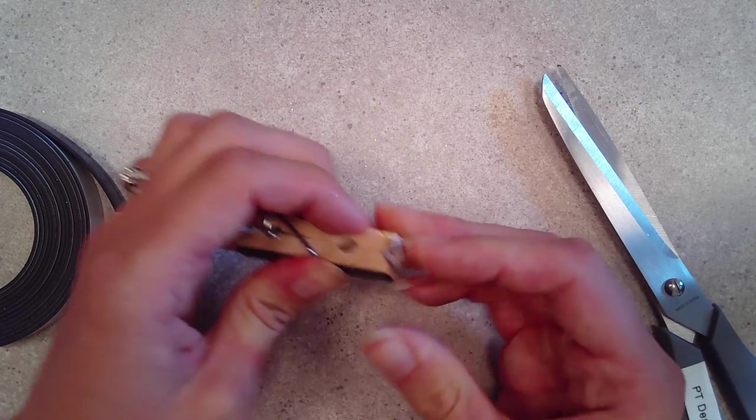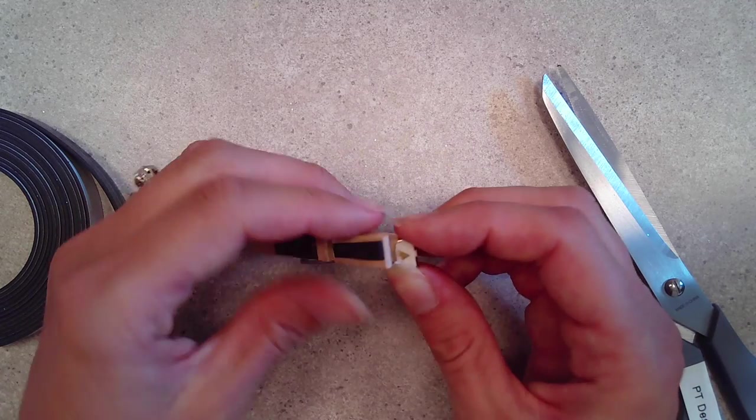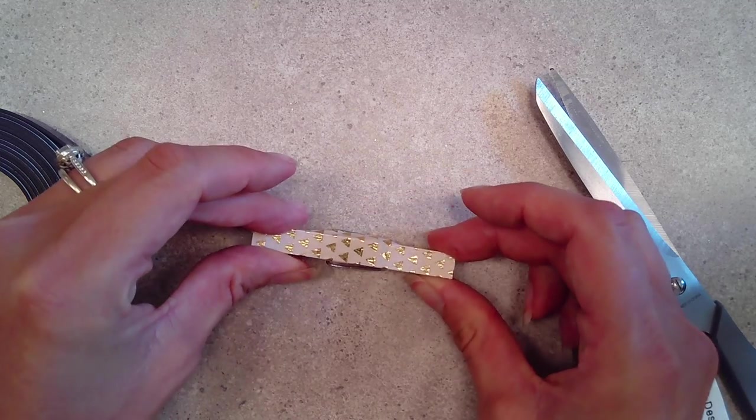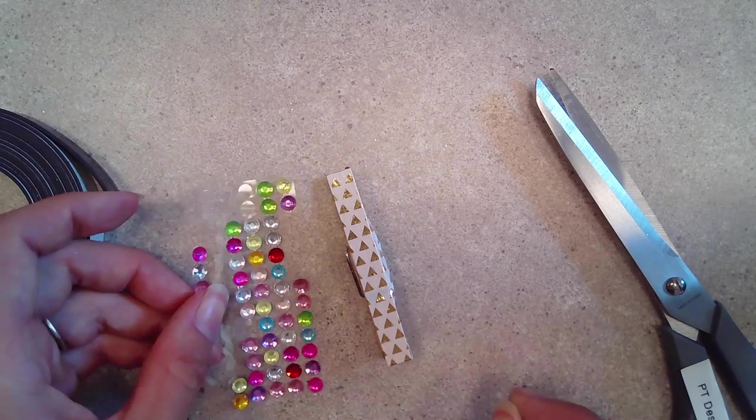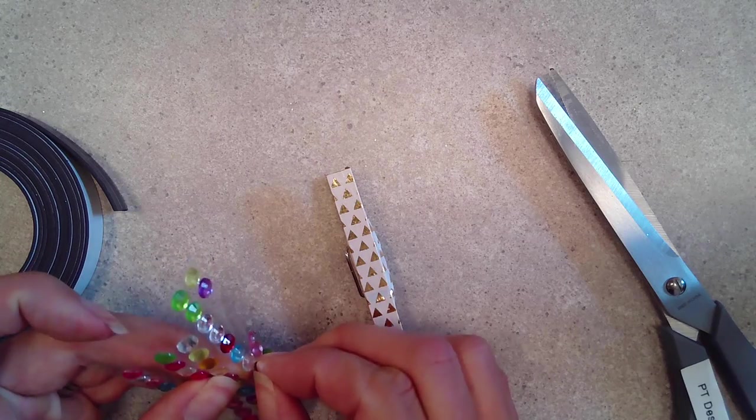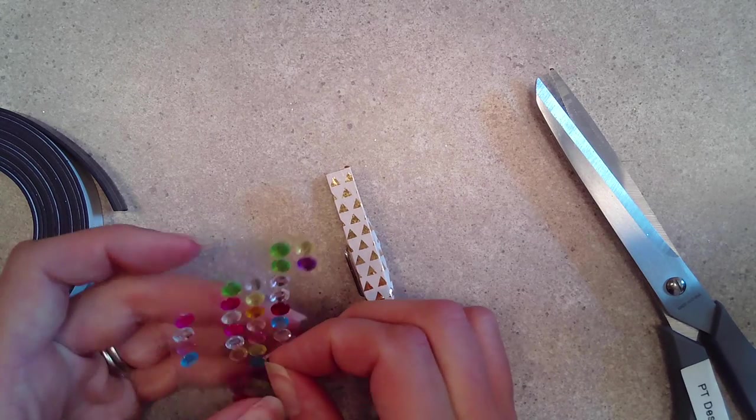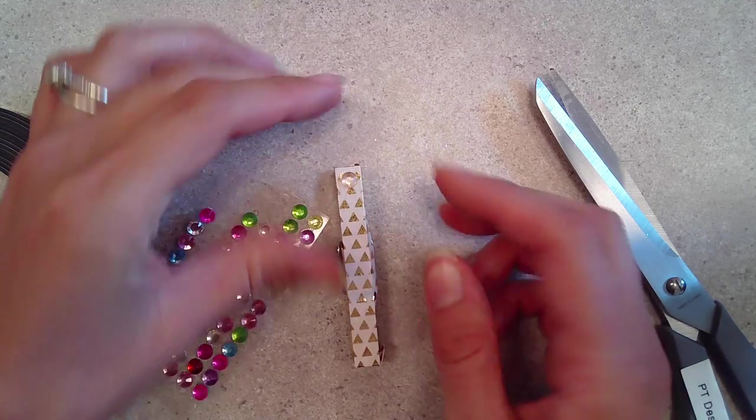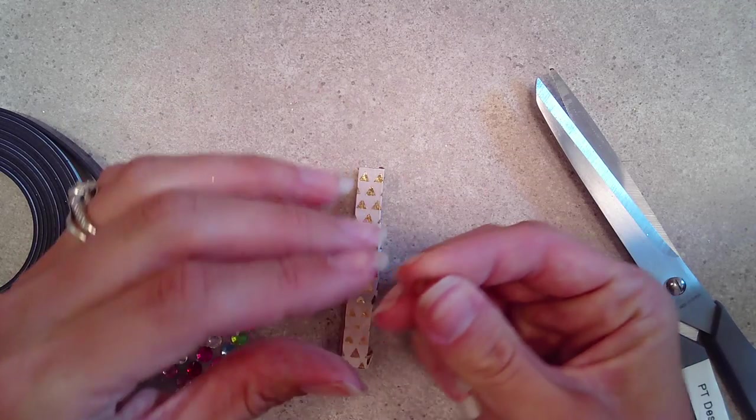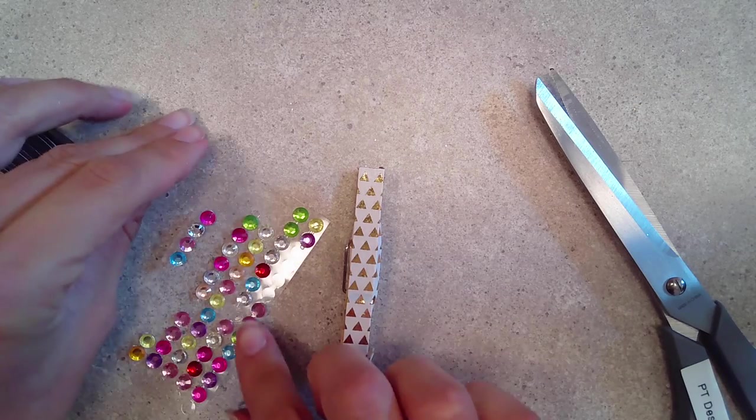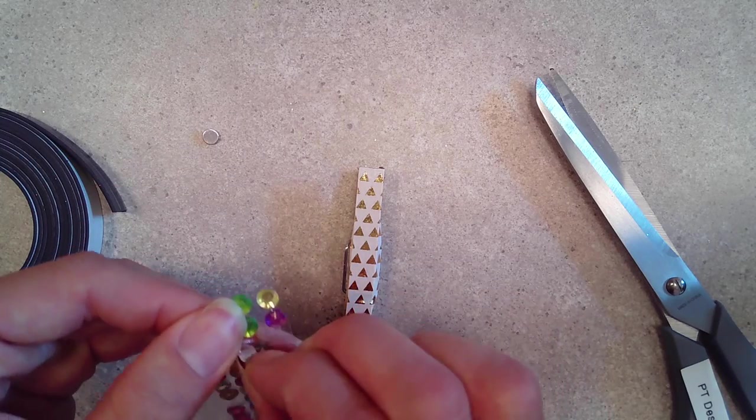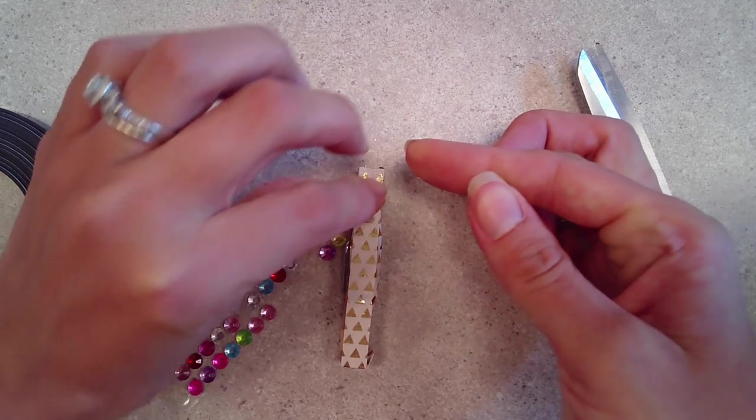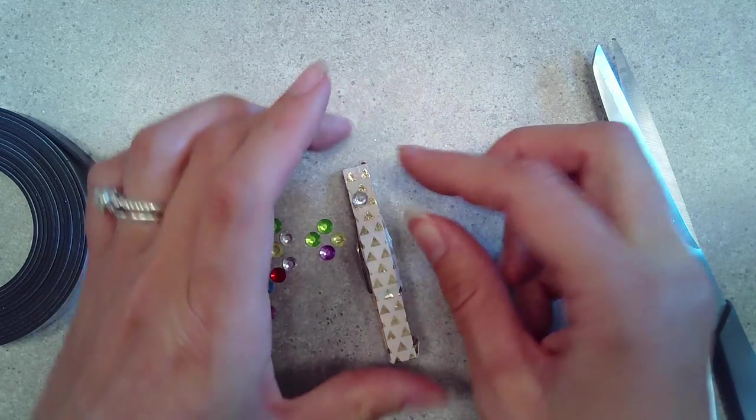And if you happen to have bling lying around your house, and if you don't I will put some in each of the kits that I'm going to give out, you can add that bling to the front. I've got some gems here. You might want to pick some that match or don't match, however you want to do it. You can put those on to add some more fun to your washi tape clothespins. These are nice because they have adhesive backs, so they're super easy to work with. You don't have to apply any glue or anything.